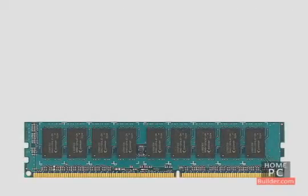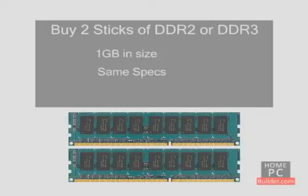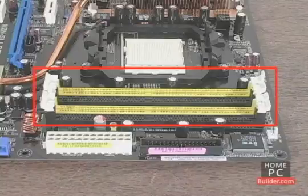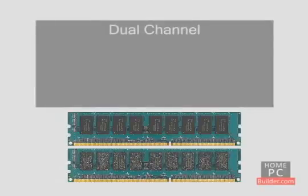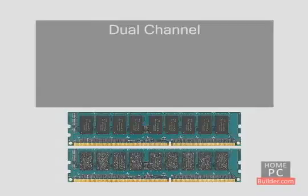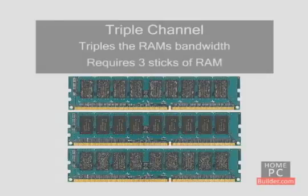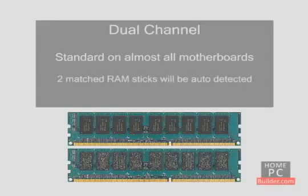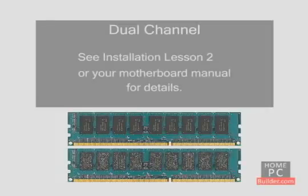When you buy RAM for your new computer, we recommend getting two sticks of DDR2 or DDR3 memory, at least 1 GB in size, with the same specifications, for a total of 2 GB. Since most motherboards have four available slots, you'll have two more slots available for adding memory in the future. The reason for using two sticks is so that you can enable dual-channel on the motherboard. Dual-channel combines the two sticks of memory to double their bandwidth and increase the speed at which the RAM is accessed. Dual-channel support is standard on just about every motherboard made today, and the motherboard will detect the matched set of RAM sticks and enable dual-channel automatically.